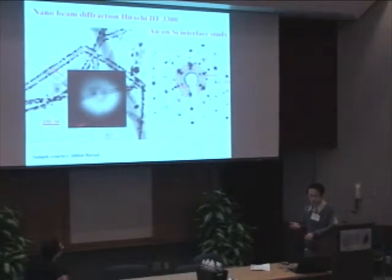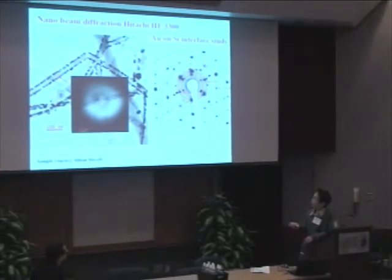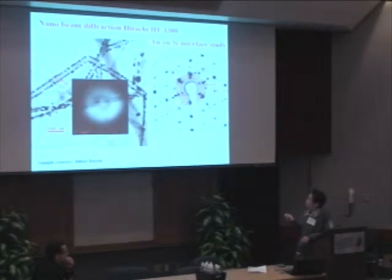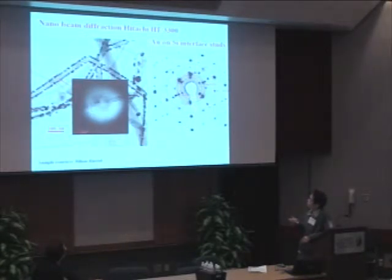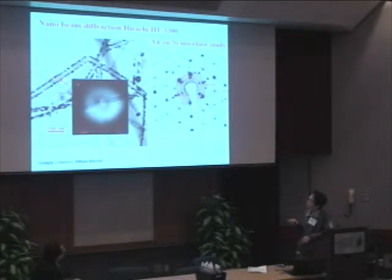In general, the electron diffraction technique gives you additional information that you cannot get from imaging, such as crystal structure and phases. On our machines, there is one unique feature called nanobeam diffraction — you can focus the beam down to less than 10 nanometers and get a diffraction pattern from just that small area, which provides a very unique technique to analyze interfaces and nanoparticles.